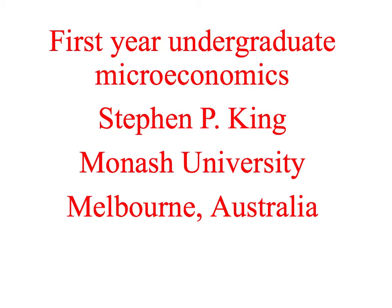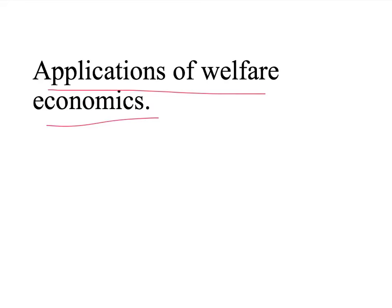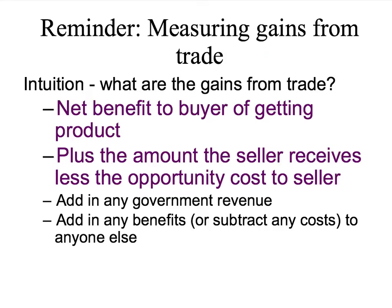Welcome back once more to first year undergraduate microeconomics. In this presentation, we're going to do our first application of welfare economics. We've spent a lot of time looking at how we measure the gains from trade, concentrating on consumer surplus, which is the net benefit to buyers, and producer surplus, which is the net benefit to sellers.